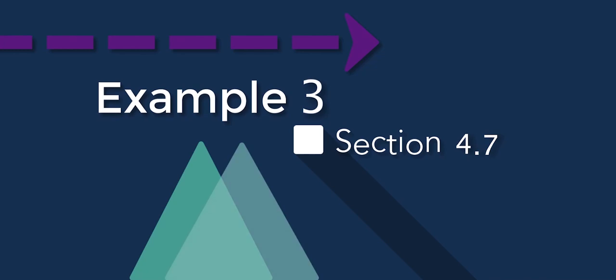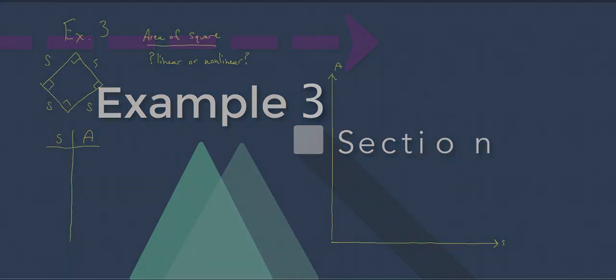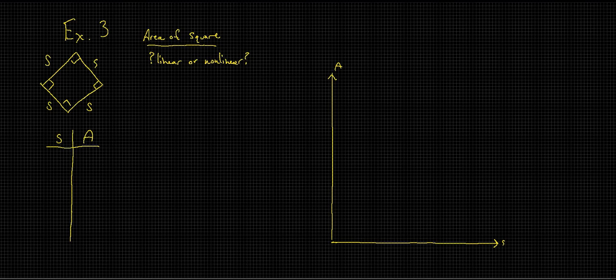All right, with example three we're asked: is the area of a square a linear or nonlinear function of the length of its sides? And to explain. So with the area of a square, we should remember that area for any rectangle is length times width, but with a square the length and the width are the same. So if we call the length of the side s, then its area equals s squared.